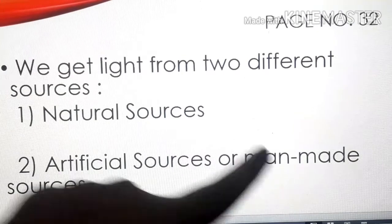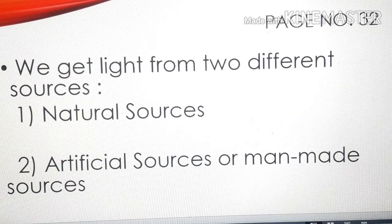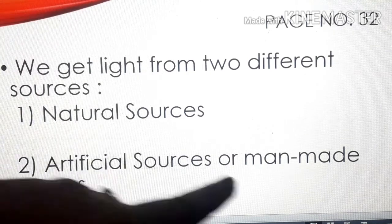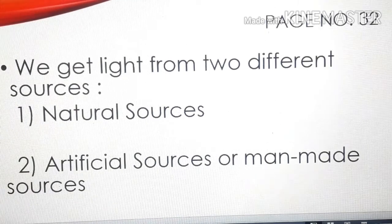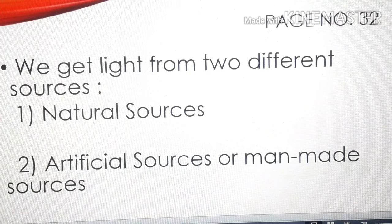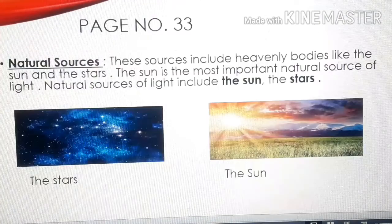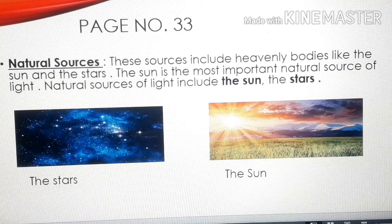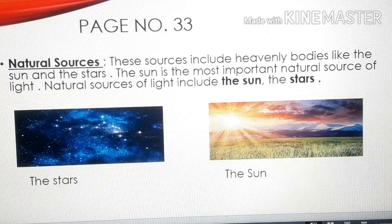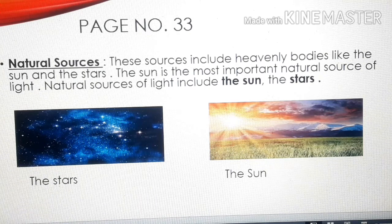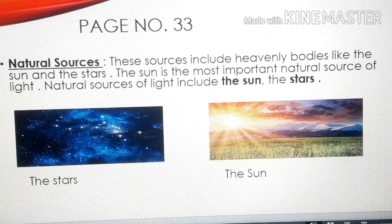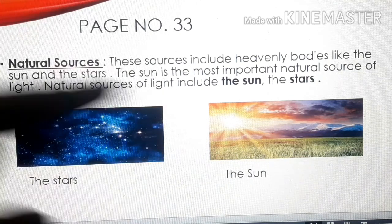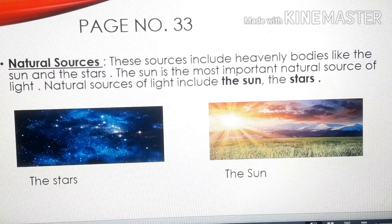Artificial sources are also called man-made sources, because they are made by human beings. Natural sources of light are not made by human beings. Two examples of natural sources of light are the sun and the stars — they have their own light, and we cannot switch them on or off. The most important natural source of light is the sun.